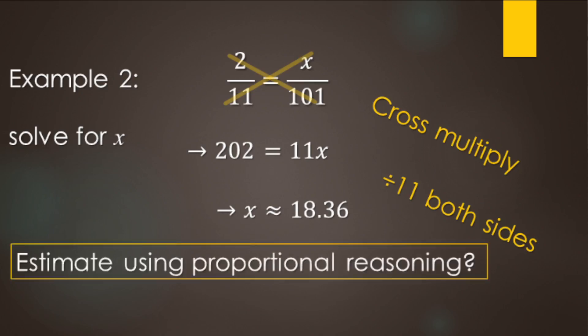Now we can estimate the solution using proportional reasoning. So we're looking here, 11 times what equals 101? Well, 11 times 9 is 99. So it's 11 times just over 9. So in this case here, we'll do 2 times just over 9. Well, 2 times 9 is 18. Well, we're doing just over 9. So it'll be just over 18. So 18.36 is the actual one. So because these don't go in evenly, we're going to end up with a decimal. So we can estimate using proportional reasoning.